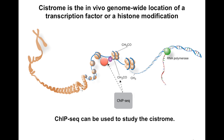Chromatin immunoprecipitation combined with next-generation sequencing, or ChIP-seq, can be used to study the Cistrome. Cistrome Analysis Pipeline, or Cistrome AP, is built for conducting integrative analysis of ChIP-seq and gene expression profiling data to help experimental biologists for the study of transcriptional regulation.